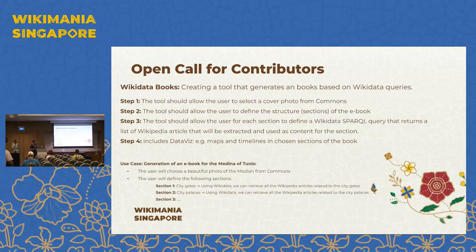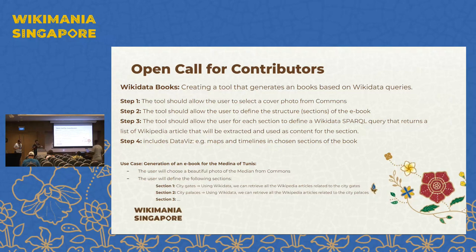A practical example: generate an e-book of the Medina of Tunis, a UNESCO World Heritage site. Choose a beautiful cover photo from Commons. Chapter one: city gates — Wikidata retrieves all Wikipedia articles about the gates of the old city. Chapter two: city palaces — instance of palaces located in the Medina of Tunis, a SPARQL query gives a list of articles. Then generate the book and download it as PDF. It can be used as an educational resource, or even printed for people without internet access, for any subject — museums, history, species.